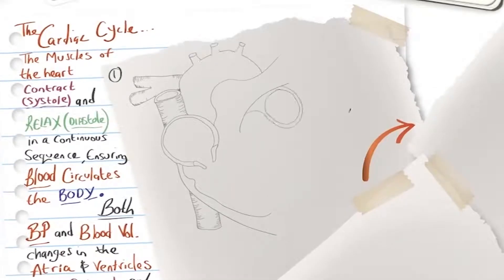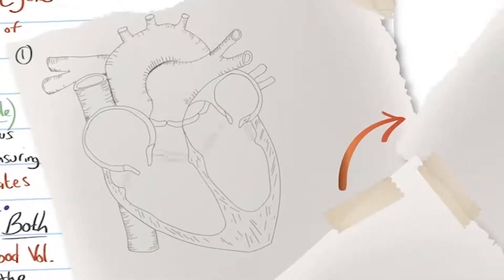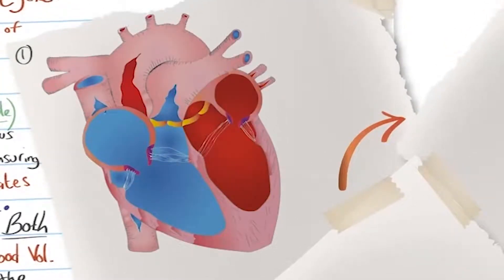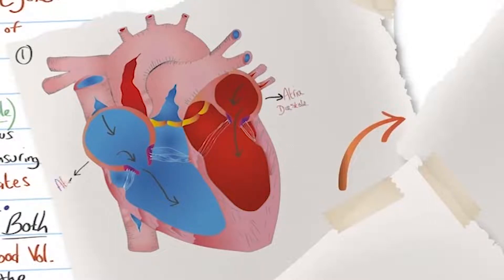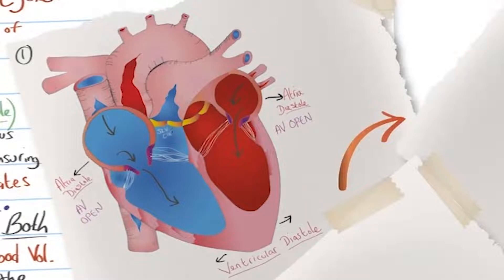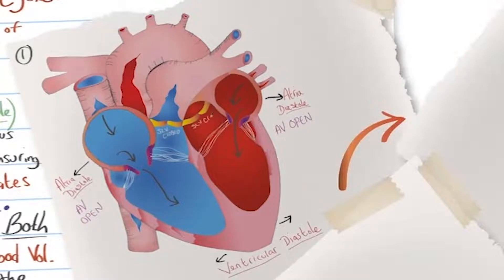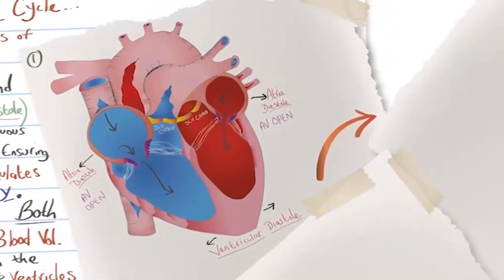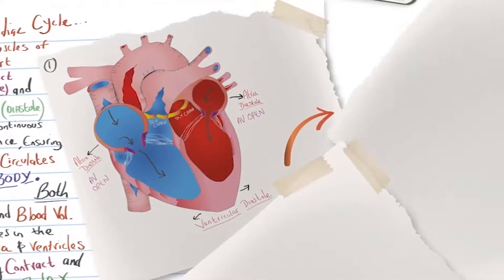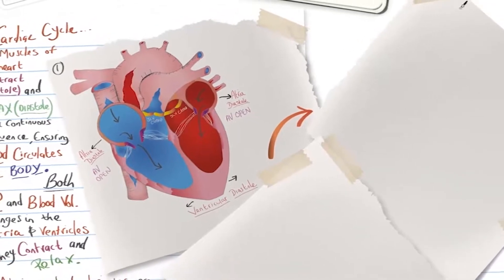Here the diagram of a heart shows stage one of the cardiac cycle, depicting blood trickling in passively from the atria to the ventricles, due to the atria being relaxed — atria diastole. The ventricles are also relaxed — ventricular diastole. AV valves are open and semilunar valves are closed. Blood begins to fill the ventricles passively until the atria contract.